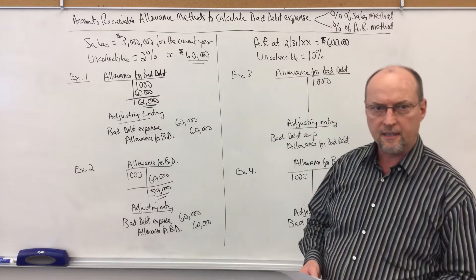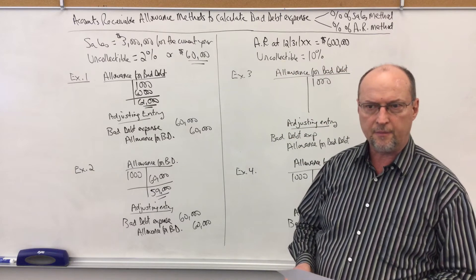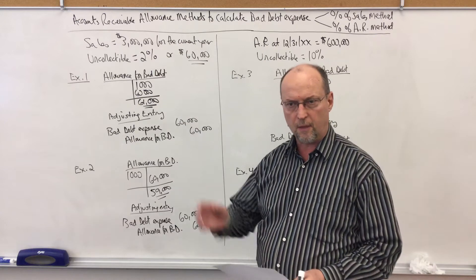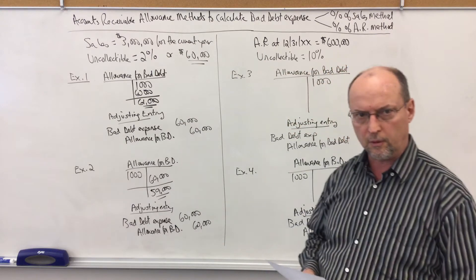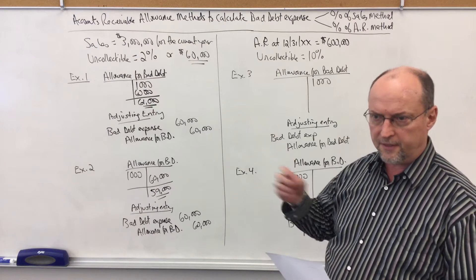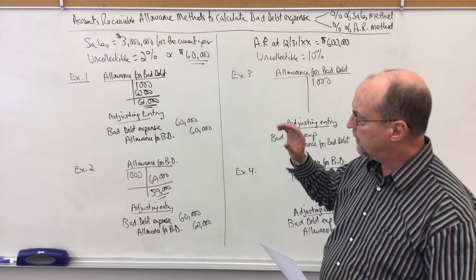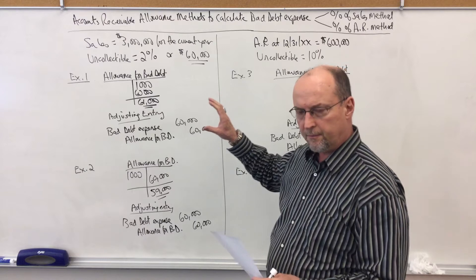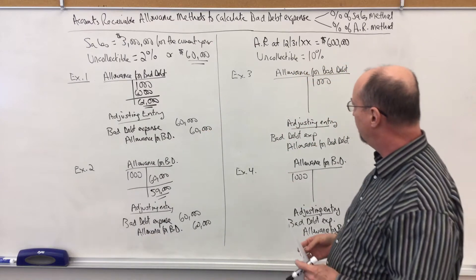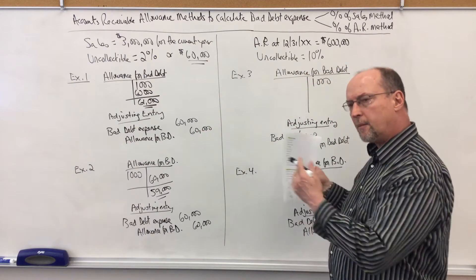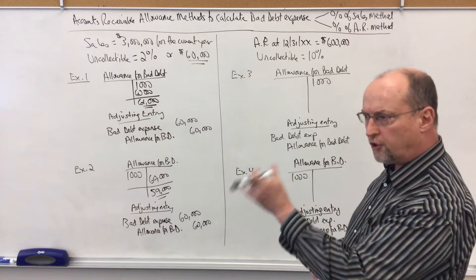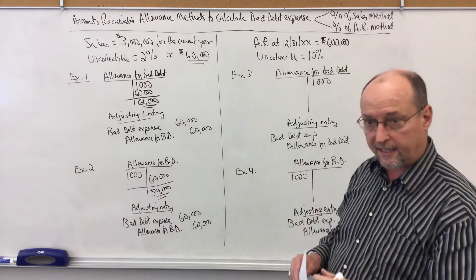We're now going to look at the allowance method using a percentage of accounts receivable. In a previous video we looked at the percentage of sales method, and now we look at the percentage of accounts receivable method. I want to compare the two, so it's probably best if you watch the two videos back-to-back.